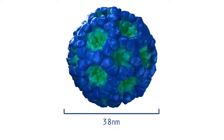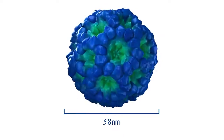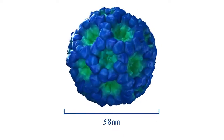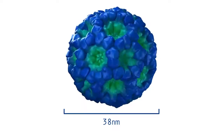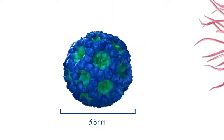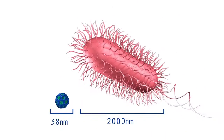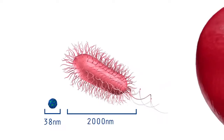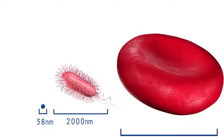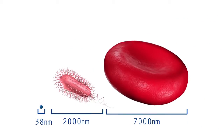The diameter of noroviruses is approximately 38 nanometers. This is 50 times smaller than the length of E. coli bacteria and 200 times smaller than the diameter of a red blood cell.